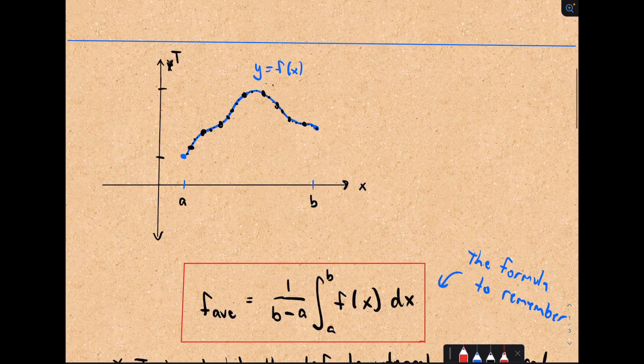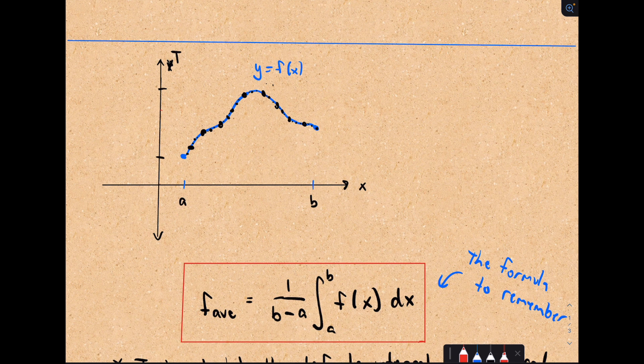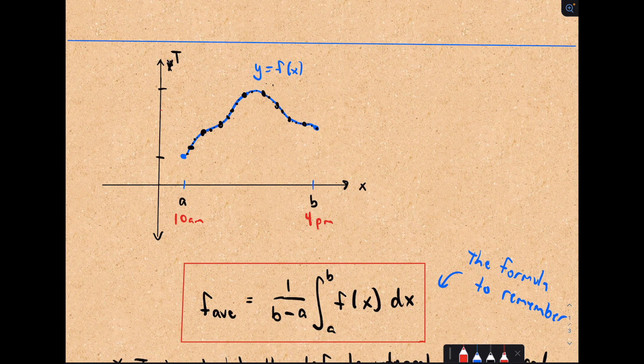And that makes sense. Suppose my blue graph represents temperature. Maybe at a, that corresponds to 10 a.m., b to 4 p.m., just random times. Suppose at 10 a.m. maybe it's 50 degrees. Maybe this hits a high temperature of 80 degrees, and then some other temperature at 4 p.m.